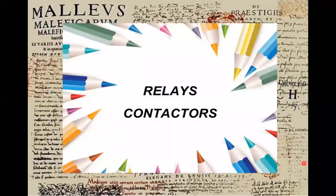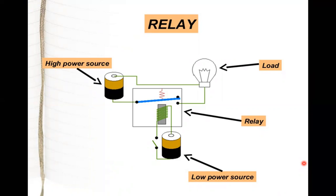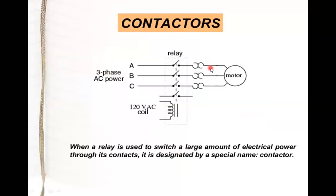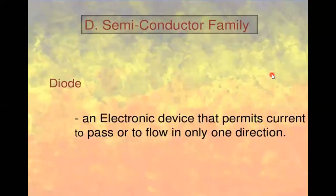Relays and contactors: a relay uses a low power source wound around an inductor. By electromagnetic induction, this acts as a switch to control a high power source. When a relay is used to switch a large amount of electrical power through its contacts, it is designated by the special name 'contactor.' Contactors are used in three-phase AC power applications, such as controlling motors.